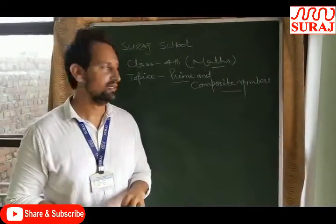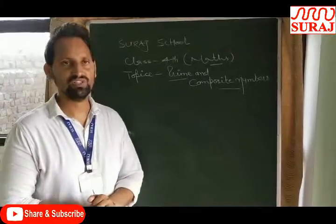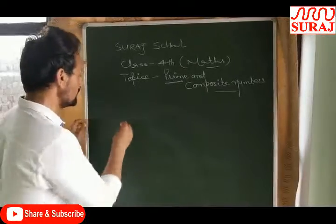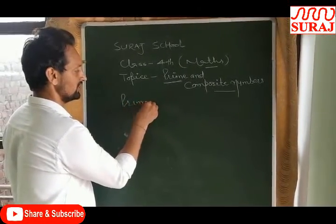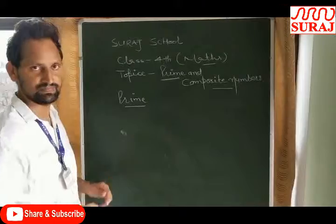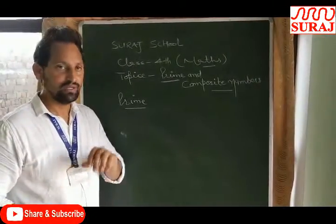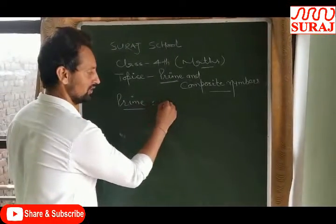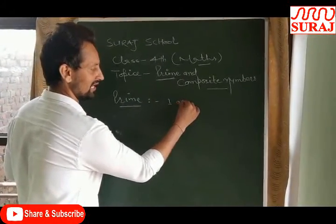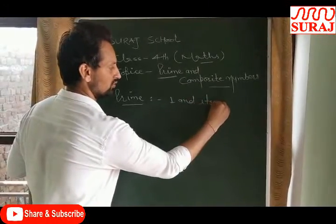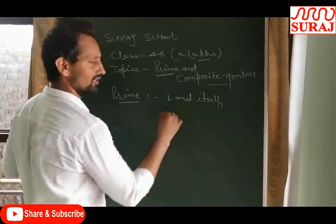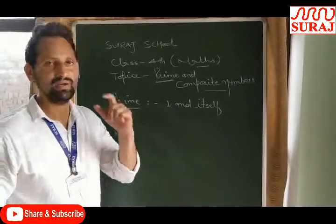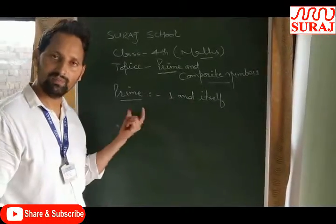First of all, prime number. A prime number is a number which you can divide by only two things: one and itself. Which number is divided by one and itself is called a prime number.